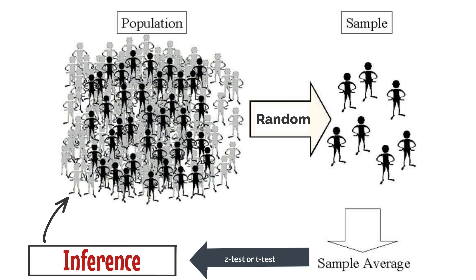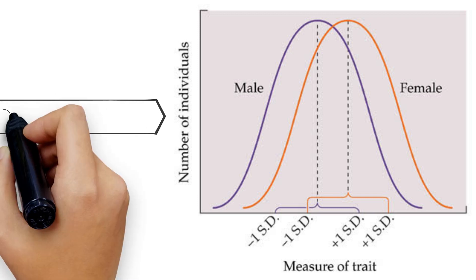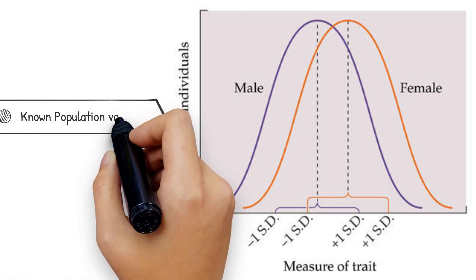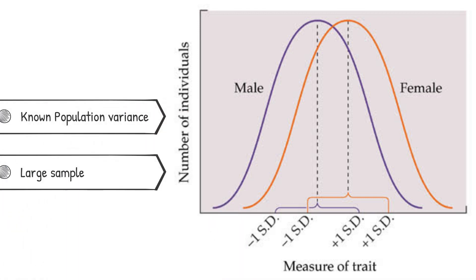A z-test is a statistical test used to determine whether two population or sample means are different when population variances are known and/or the sample size is large.